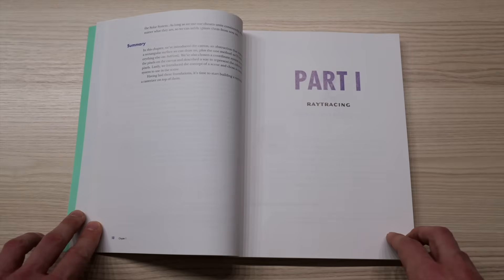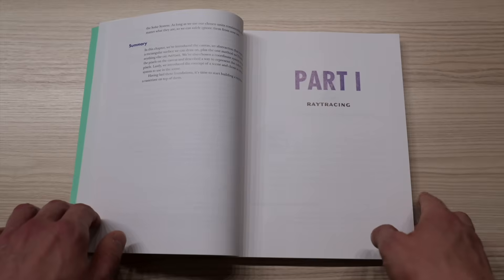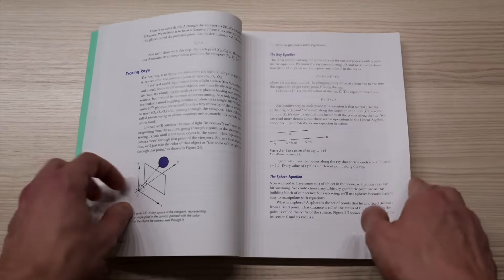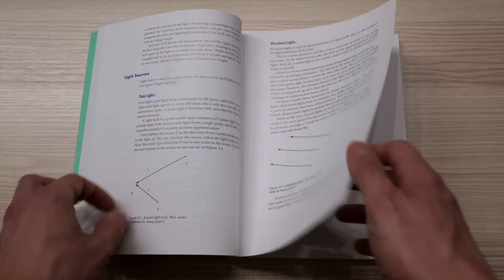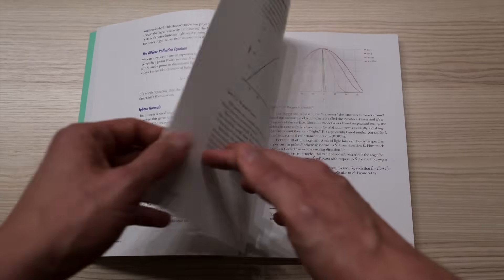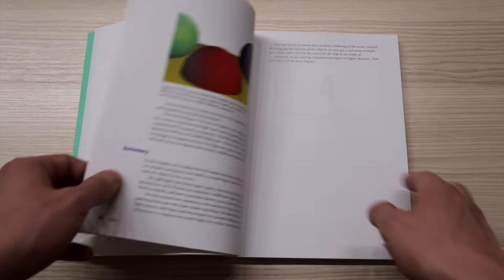The book is divided into two parts. In the first one, we use this step-by-step approach to build a ray tracer. Ray tracers tend to produce quite realistic images with shadows, reflections and so on. The code is quite simple, but the performance is slow.